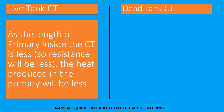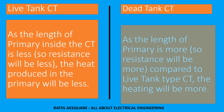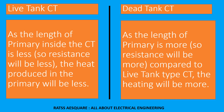In live tank CT, as the length of the primary inside the CT is less, resistance will be less, and the heat produced in the primary will be less. In dead tank CT, as the length of the primary is more, resistance will be more compared to live tank type CT.